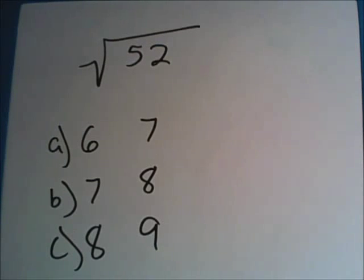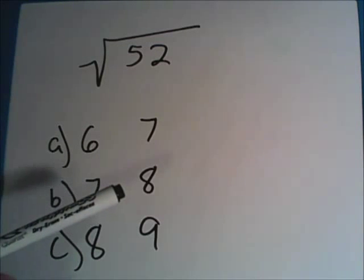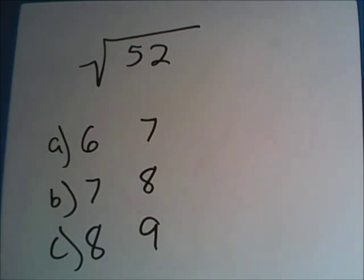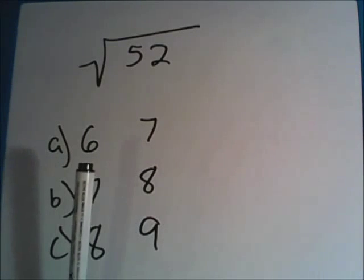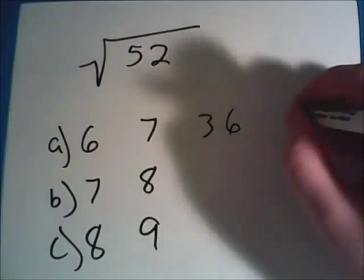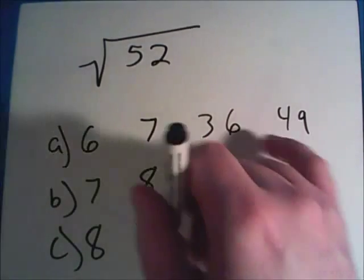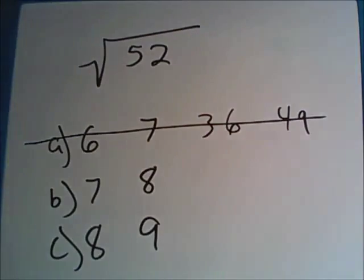One last thing and we're pretty much done. Sometimes you'll have to find a square root and it'll say that the answer lies between two numbers. So in this one, the square root of 52 lies between six and seven, or between seven and eight, or between eight and nine. The way I recommend solving this is taking your first set of numbers, six and seven. What is six squared? Well, that's six times six, so that's 36. And seven squared is 49. So does 52 lie within 36 and 49? No, so A would not be the correct answer.